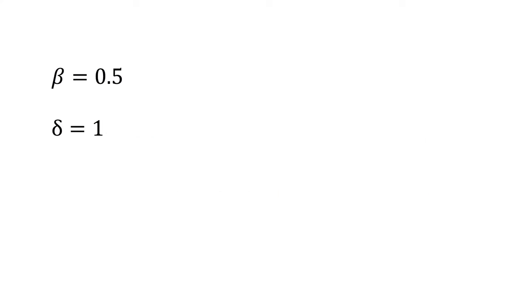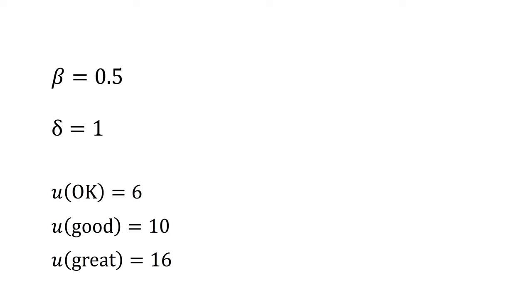The first example involves forcing the optimal course of action. A sophisticated present-biased agent with beta equals 0.5 and delta equals 1 is choosing between three movies: an okay movie, a good movie, and a great movie. The okay movie gives utility of 6, the good movie utility of 10, and the great movie utility of 16. Only the okay movie is showing today at t=0, the good movie next week at t=1, and the great movie in two weeks at t=2. The agent has enough money and time to watch only one movie.